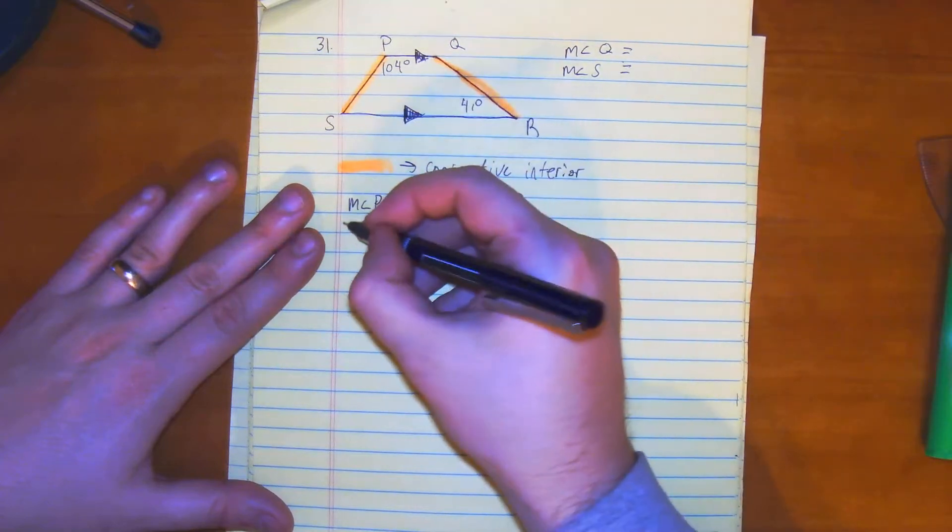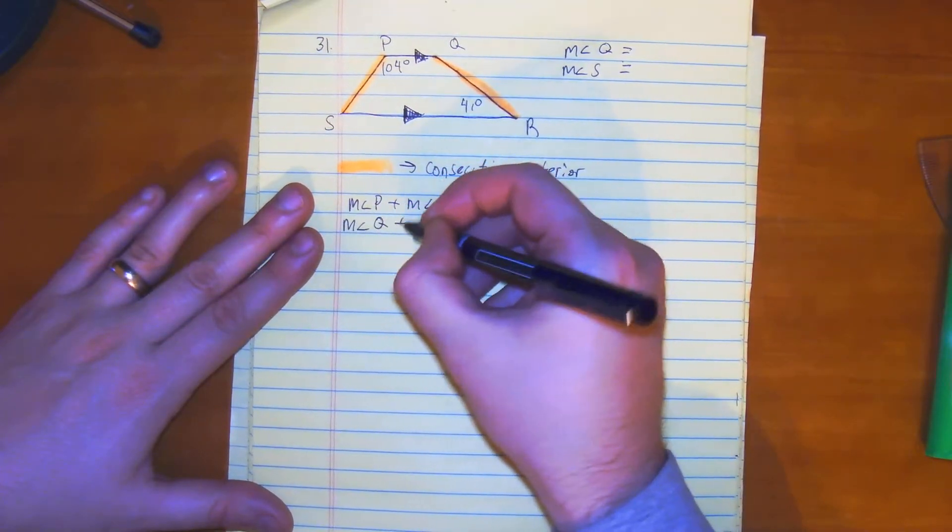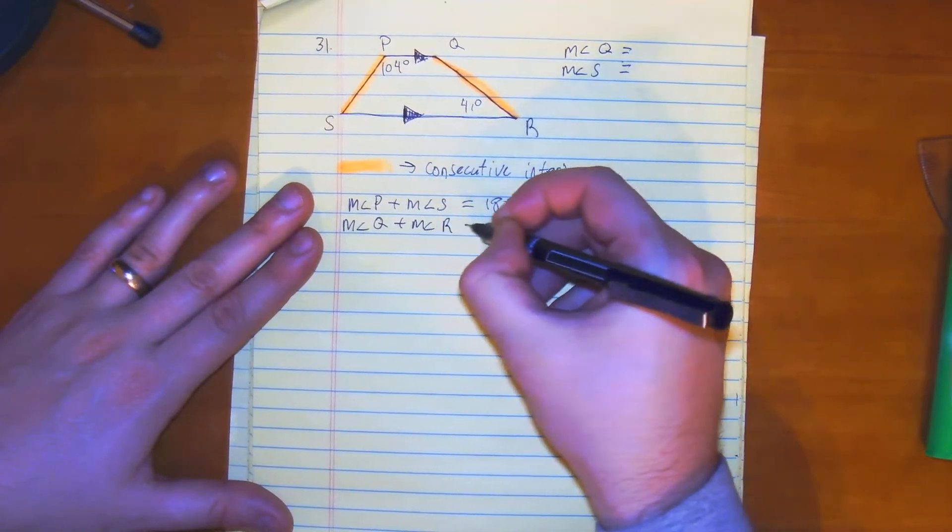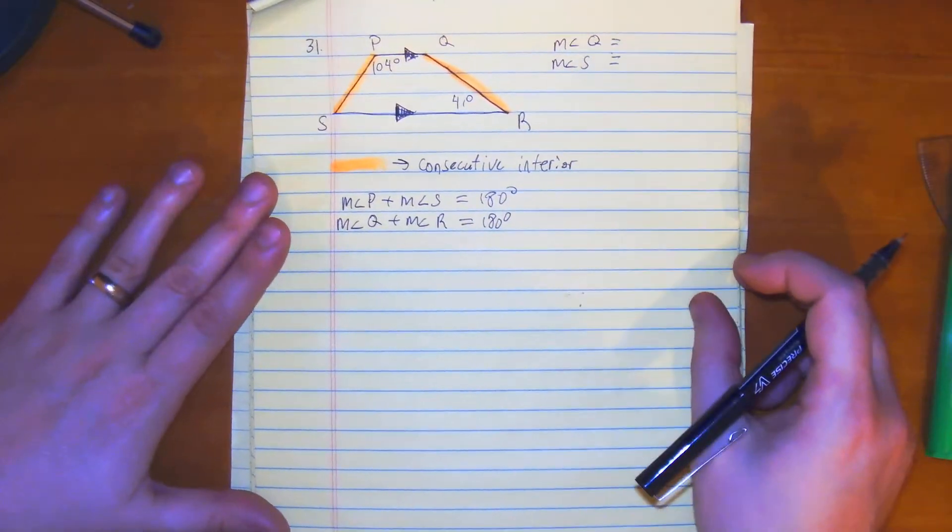And then we also have the measure of angle Q plus the measure of angle R is equal to 180. That's all it means.